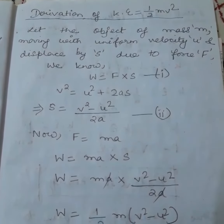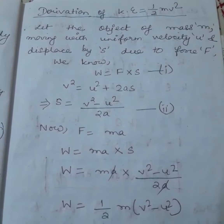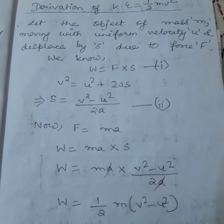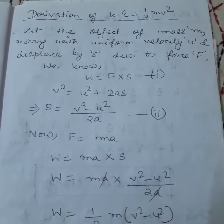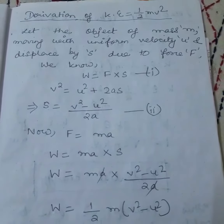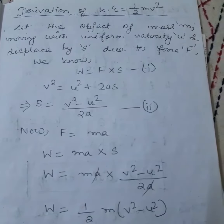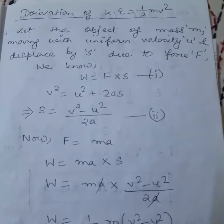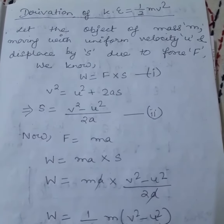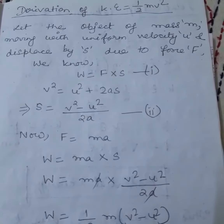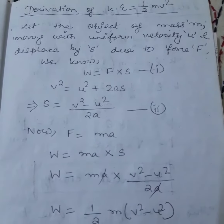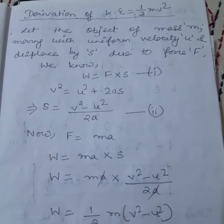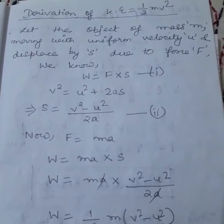Namashivaya students. Today in your physics class I shall show you how to derive the formula for kinetic energy. Last day I taught what is kinetic energy, the three kinds of kinetic energy, and I said that the formula for kinetic energy is half m v square, where m stands for mass and v stands for velocity. Today I shall show you how we got this formula.